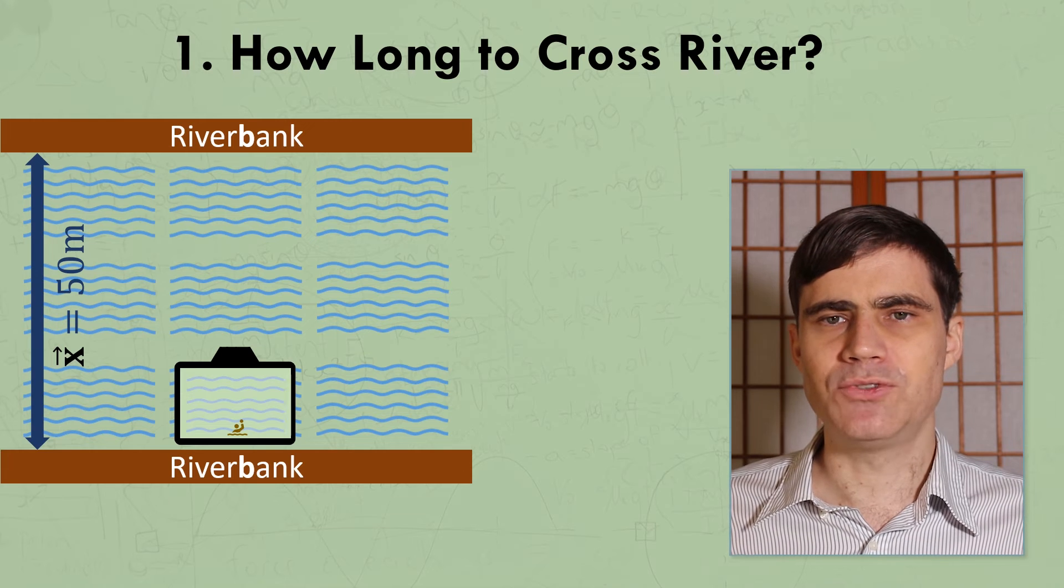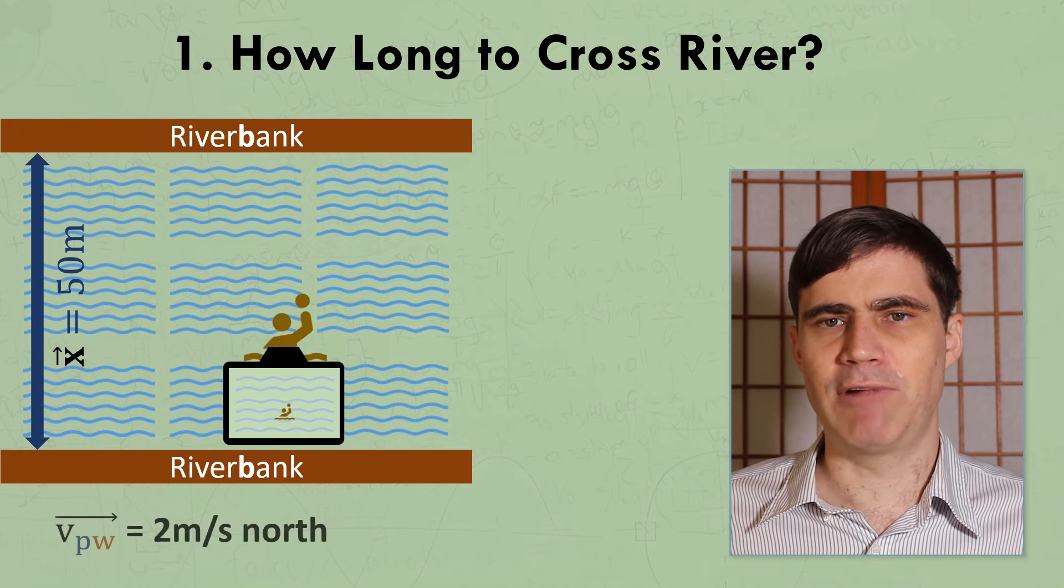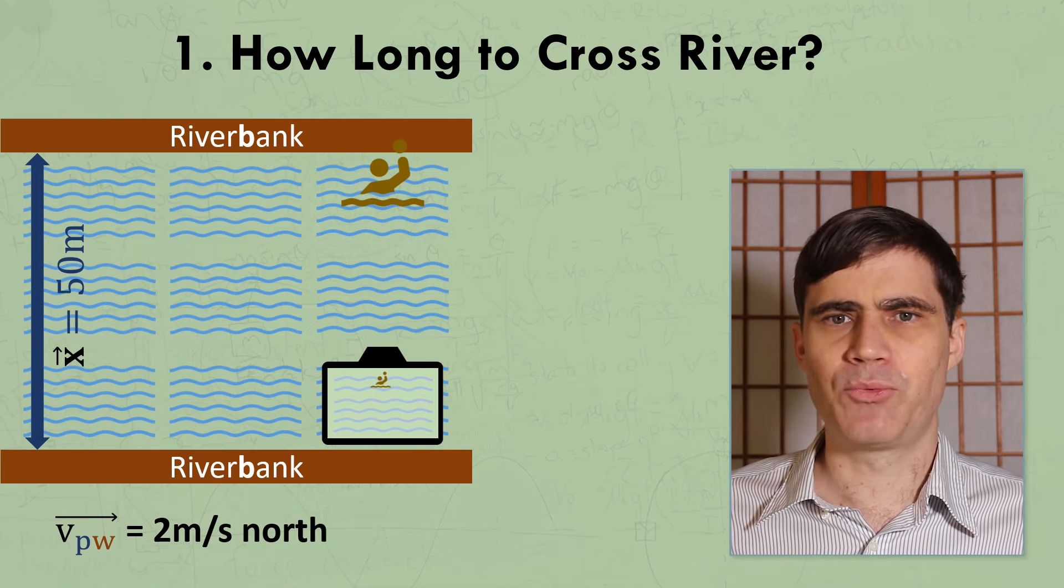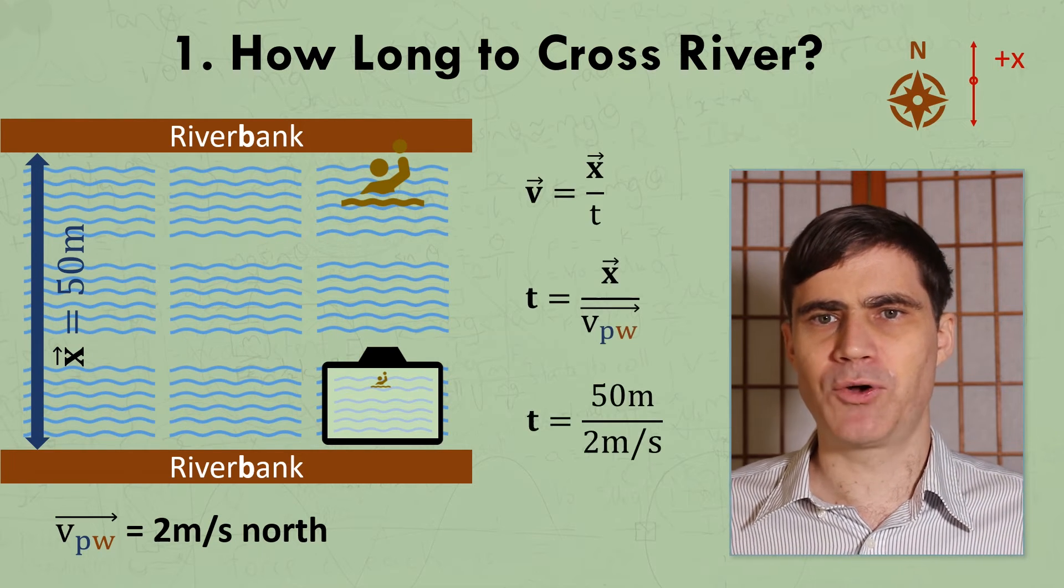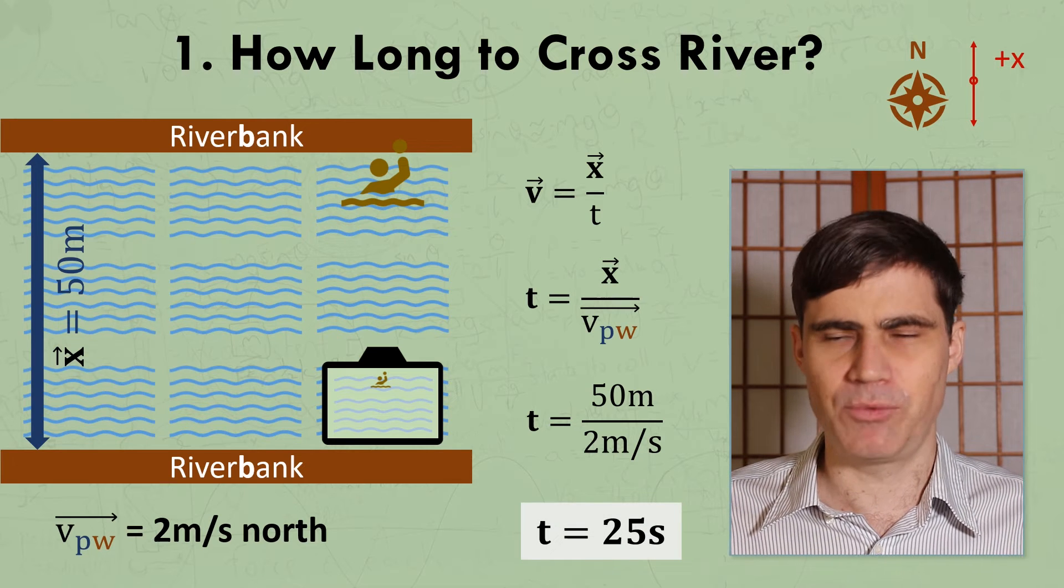As for how long the student takes to cross the river, we can just use the velocity of the person relative to the water. It wouldn't really matter whether the river was flowing or not, but since it is, we could imagine using the video recorded by the camera as it floated down the river with the swimmer.